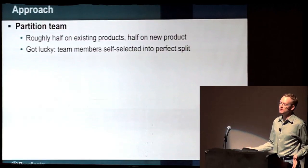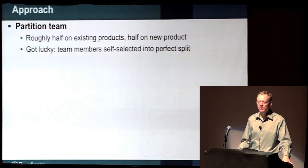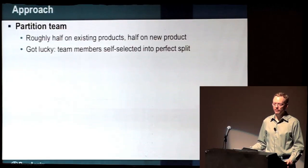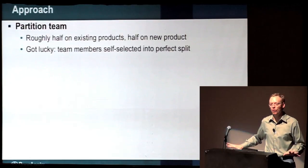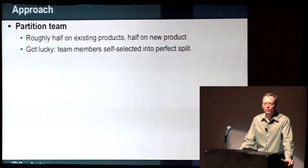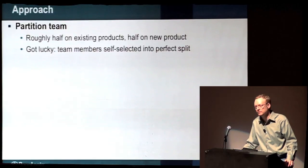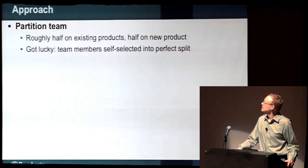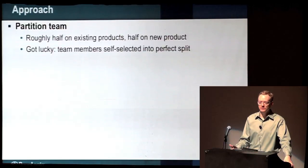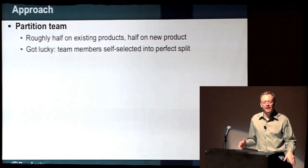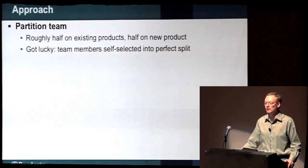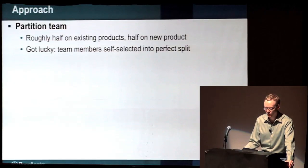The approach was to partition the team. We said we're going to have to carve off some time — it's too hard to put all these things in one big bucket of stories. We're an Agile, scrum-based team. We need to isolate to make sure we make forward progress on both the new stuff and the existing stuff. We actually asked the team and the good news was they basically self-selected exactly like we wanted. Some people said they wanted to keep improving the legacy product; others said they really wanted to jump into the cloud and learn it.